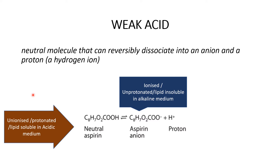Most drugs occur as either a weak acid or weak base. A weak acid is a neutral molecule that can reversibly dissociate into an anion and a proton. Here we can see an example: neutral aspirin dissociates into an aspirin anion and a proton. So aspirin is a weak acid — when it loses a proton it is in the ionized, unprotonated form, and when it is protonated it is in the neutral or unionized form.